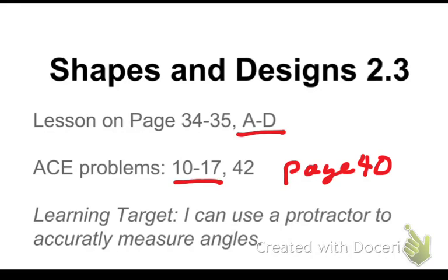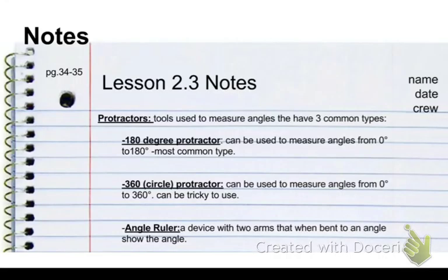Our learning target today is that I can use a protractor to accurately measure angles. For our notes today, we're going to want our notes to be in regulation. This means that we're going to want the lesson 2.3 notes written at the very top of a clean sheet of notebook paper.